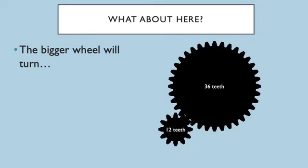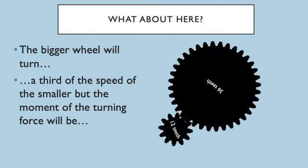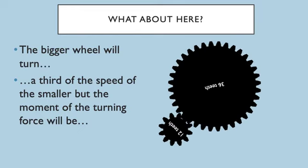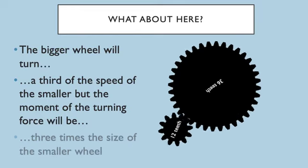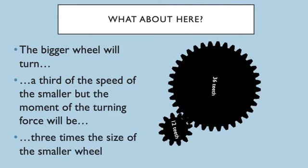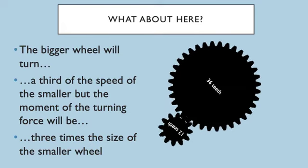So have a look at this one. The bigger wheel—what do you think? How different do you think the movement between the small wheel and the larger wheel is going to be? You've got 12 teeth to 36 teeth. So it's going to be a third of the speed of the smaller wheel, but the moment of the turning force in the larger one will be three times the size of the smaller wheel. Again, because we're looking at the ratio. 36 divided by 12 is 3.